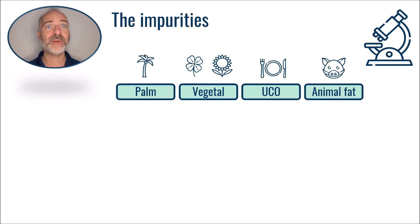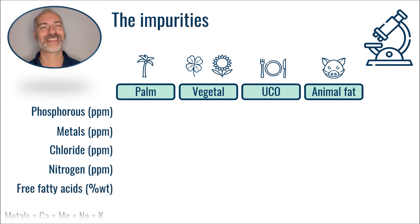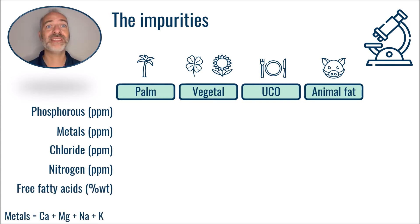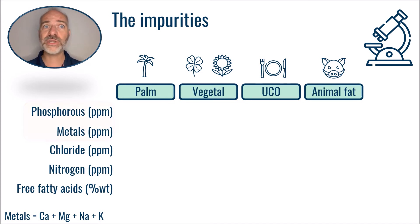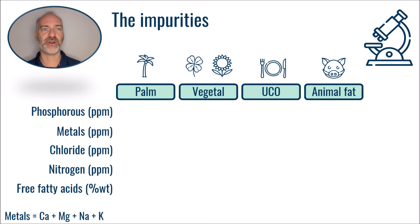Once we have described the composition in terms of triglycerides and fatty acids, let's have a look at the impurities. Indeed, these impurities can have a significant impact on the downstream process design. When we talk about impurities, we are mainly talking about metals and, more particularly, phosphorus.